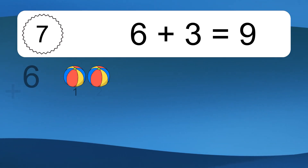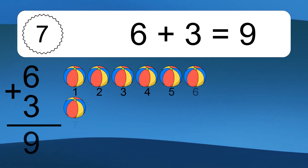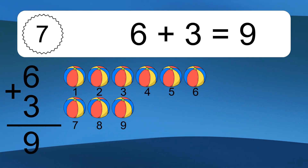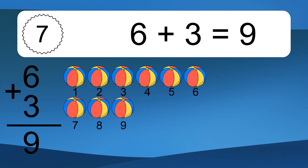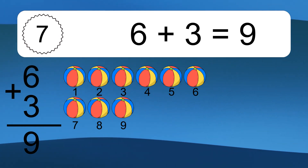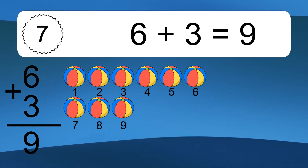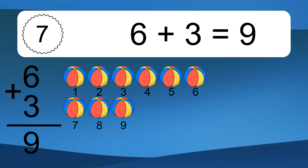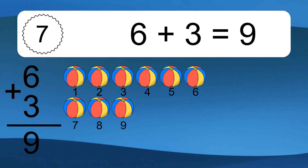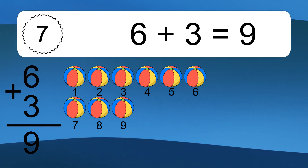6 plus 3 equals 9. Let's count it. 1, 2, 3, 4, 5, 6, 7, 8, 9.